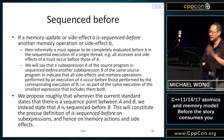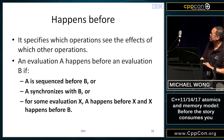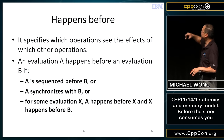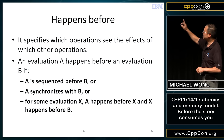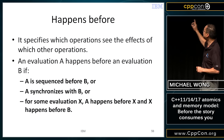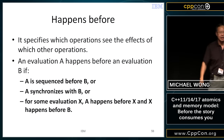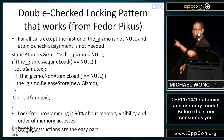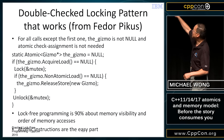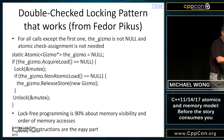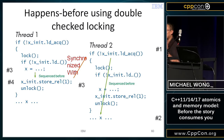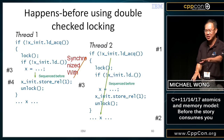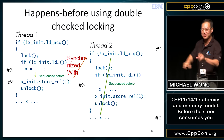Here is the definition of happens-before: A happens before B if A is sequenced before B, or A synchronizes with B, or for some evaluation X, A happens before X and X happens before B. I'm going to put this into concrete terms using double-checked locking. There's a minor subtle difference with the previous slide — he has a non-atomic load in the middle whereas I have an atomic load, but most non-atomic loads can be replaced by a relaxed atomic load, which is what this is.